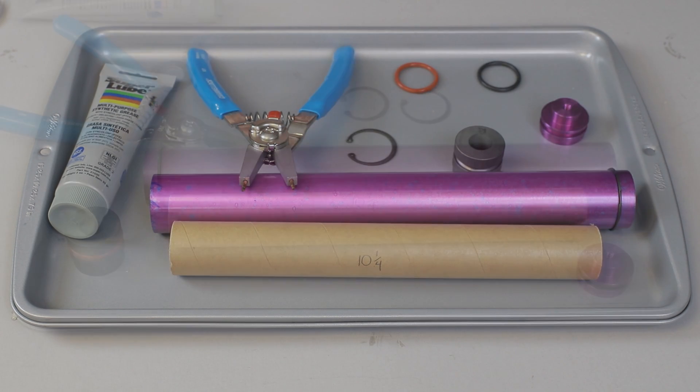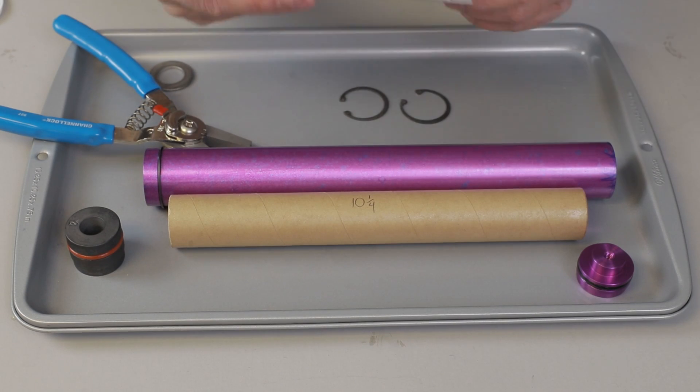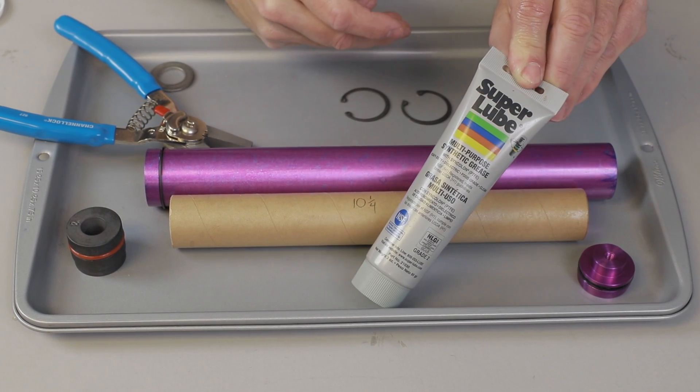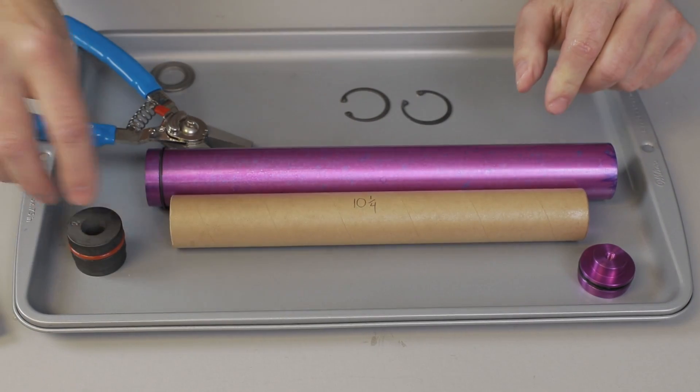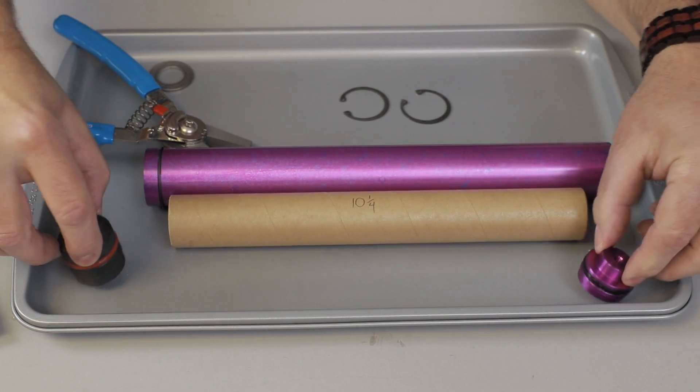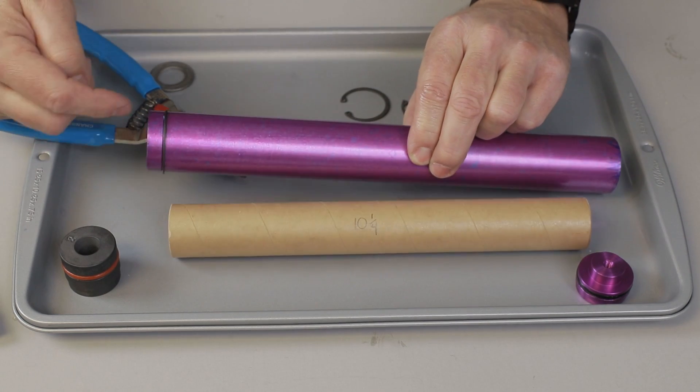I like to use this super lube synthetic grease—it really handles the heat well. I've already lubed up my o-rings on each end here and put a little bit of lubricant inside the motor tube where the o-rings will slide in.